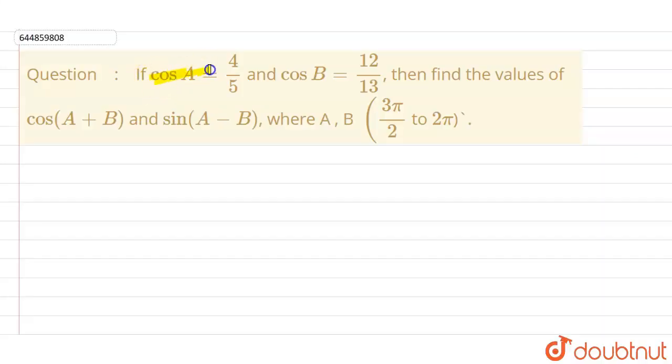Our question is: if cos A equals 4/5 and cos B equals 12/13, then find the values of cos(A+B) and sin(A-B), where A, B belongs to 3π/2 to 2π. It means the value of A and B is in this interval.